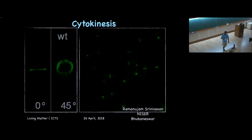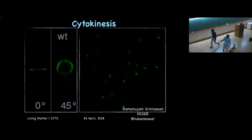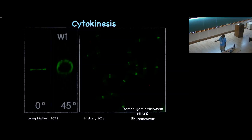Yesterday I talked about cell shape and how the actin cytoskeleton maintains cell shape in bacteria. Today I'm going to talk about cytokinesis, where the cytoplasm is partitioned into two and the mother cell gives rise to two daughter cells.